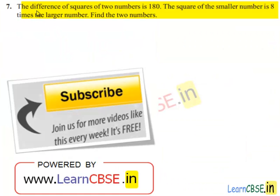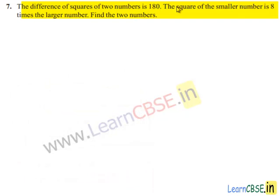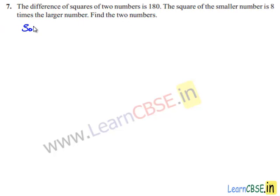Moving on to the seventh problem. The difference of squares of two numbers is 180. The square of the smaller number is 8 times the larger number. Find the two numbers. Let us assume the larger number is equal to x.